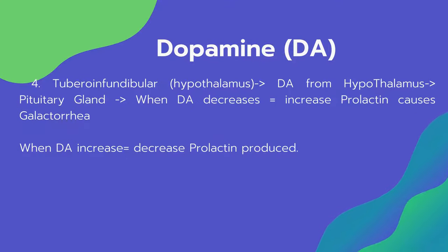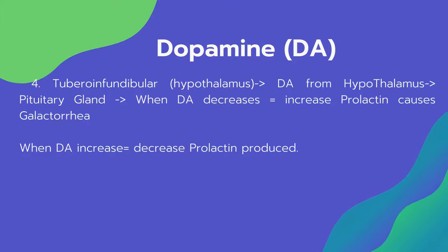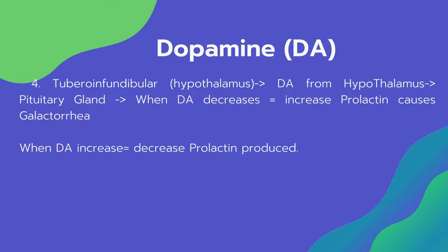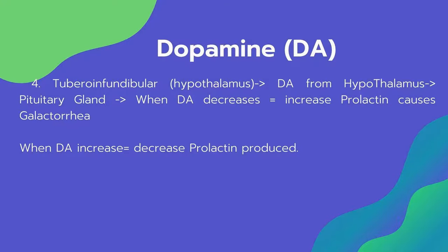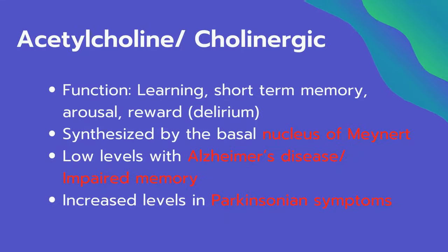The fourth dopamine pathway is the tuberoinfundibular pathway, where dopamine travels from the hypothalamus to the pituitary gland. When antipsychotics decrease dopamine in this pathway, prolactin increases, which can cause galactorrhea. Conversely, increased dopamine in this pathway leads to decreased prolactin production.